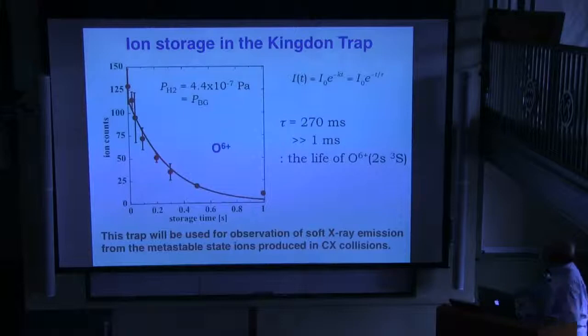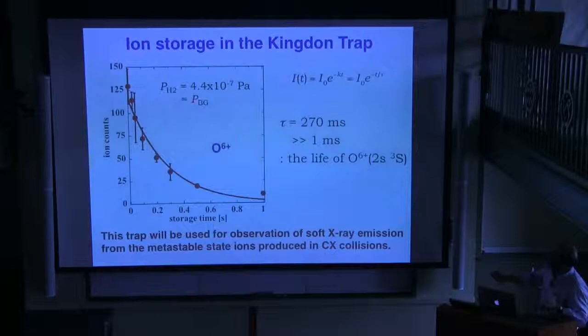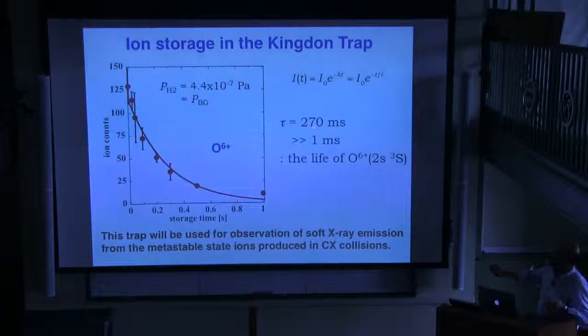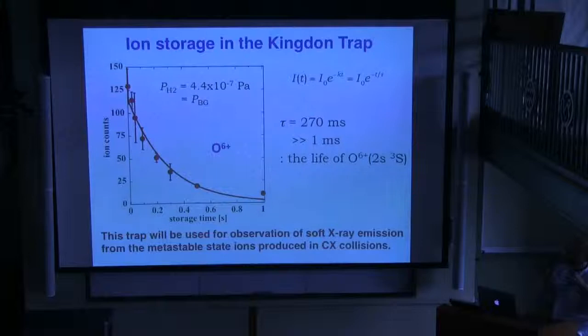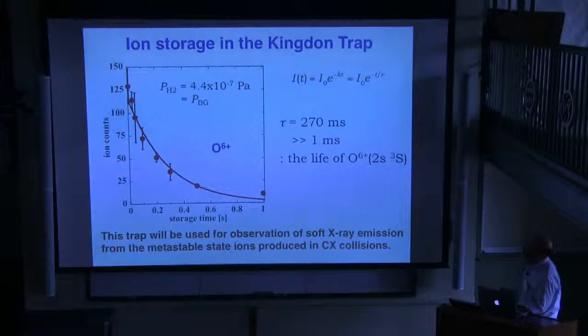One important result: when we use this ion trap and store O6+ ions, the O6+ ion intensity decreases as a function of time, mainly due to collisions with background gas in the trap. Even so, the storage lifetime is about 270 milliseconds — much longer than the metastable state lifetime. So we believe we can accumulate excited-state ions in the trap and observe photon emission from the trap. Unfortunately last year we had many troubles with the experimental setup, so we could not yet do the real observation of forbidden transition lines.